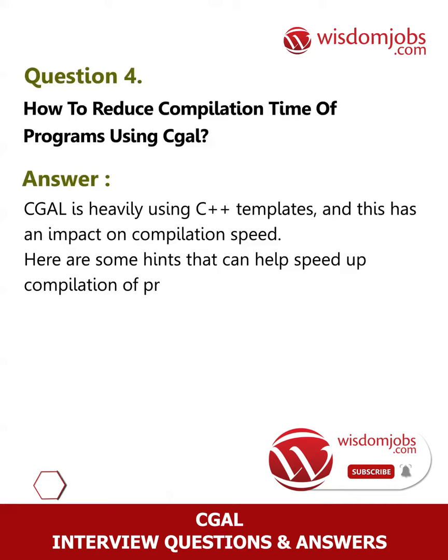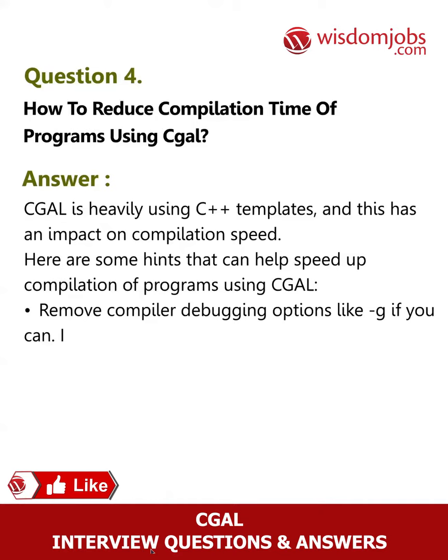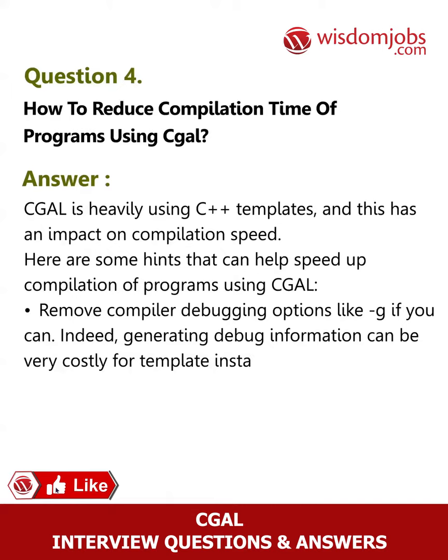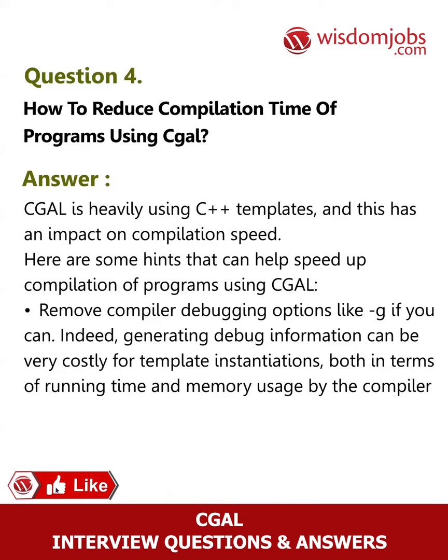Generating debug information can be costly both in terms of running time and memory usage by the compiler toolchain. Remove compiler optimization options like -O2 when you do not need them, such as in the early steps of the development cycle of your programs.